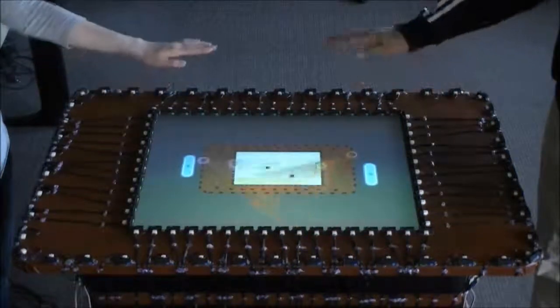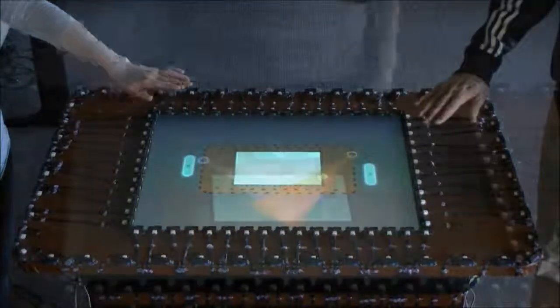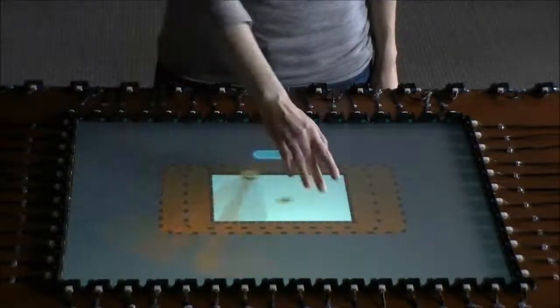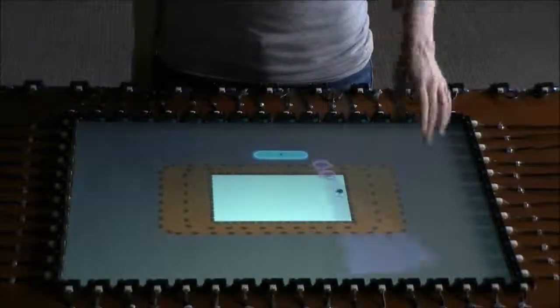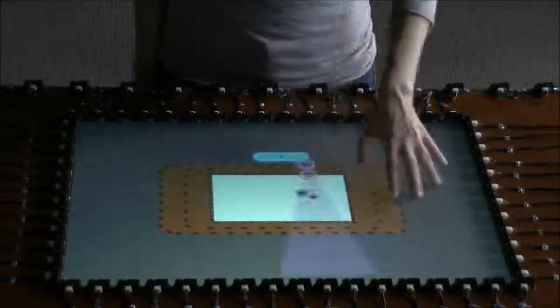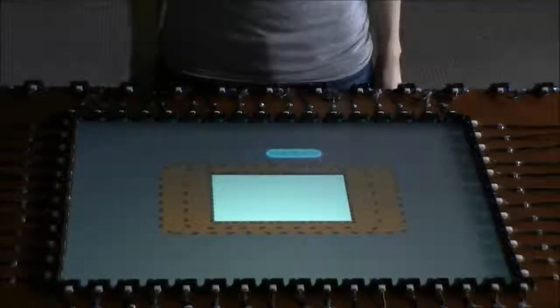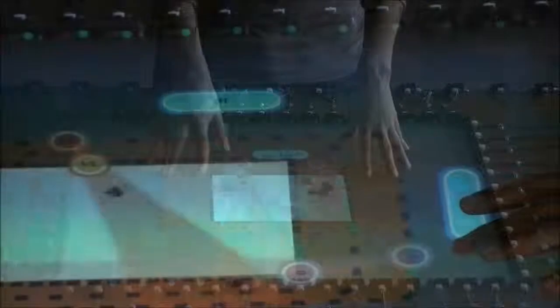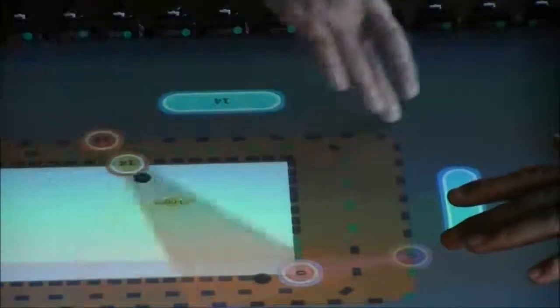Combining this information, MEDUSA can match touch events to users and their hands. Here, a touch is detected by the surface. MEDUSA is able to label this touch as coming from the right hand. MEDUSA can also determine which touches belong to which user.